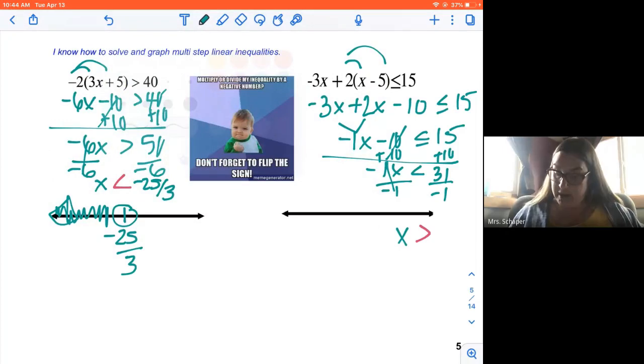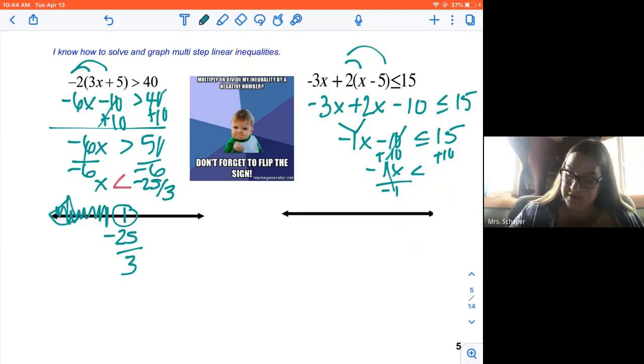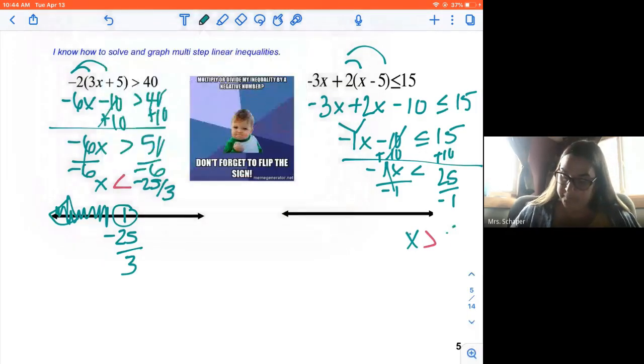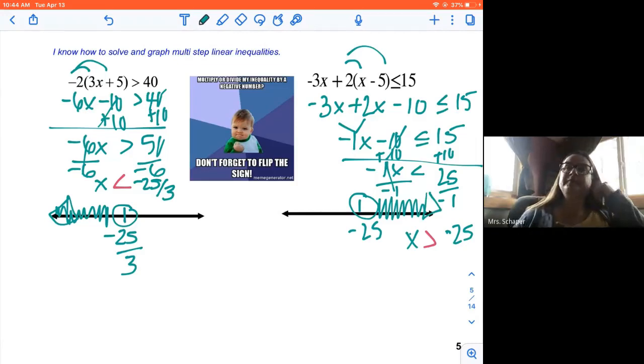So then x is greater than negative 31. x is greater than, huh? I did a mistake. Let me fix it real quick. That was a 10. My handwriting wasn't super neat. So let's try this again. 15 plus 10 is 25. Divide by negative 1. x is flip the sign because I'm dividing by a negative number is greater than negative 25. Negative 25. Open dot. Shaded to the right.